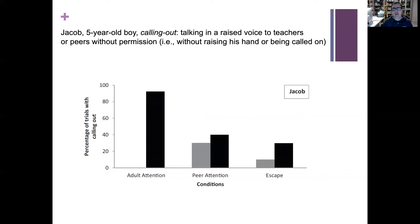She was working with several children in typical classrooms — typically developing kids. Here's Jacob, a five-year-old boy. The problem behavior occurring quite consistently is what they defined as calling out: talking in a raised voice to teachers or peers without permission and without raising his hand or being called on. Jacob was just talking all the time, raising his voice to teachers without any permission.